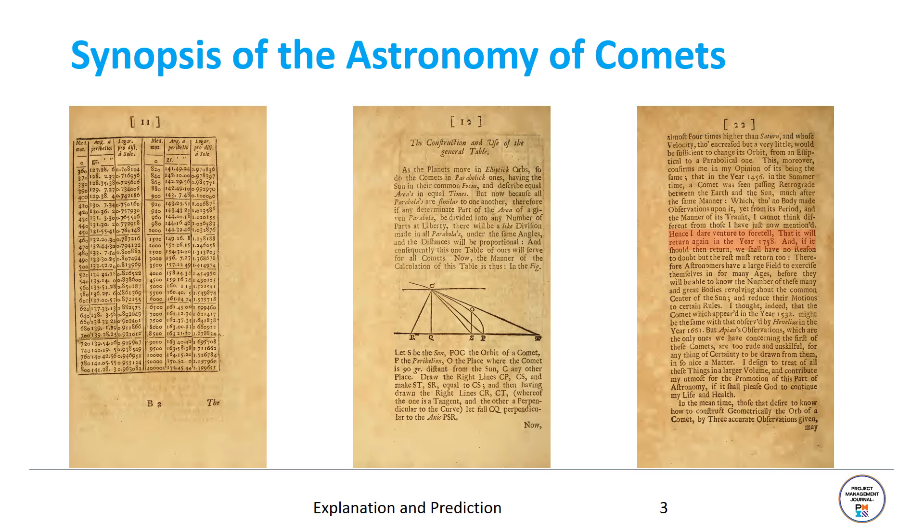He used these laws of motion to compute the periodicity of a specific comet which he documented in his well-known Synopsis of the Astronomy of Comets. You see a little excerpt of this book with many mathematical calculations, but there's one striking element. On page 22 he says, hence I dare venture to foretell that it will return again in the year 1758.